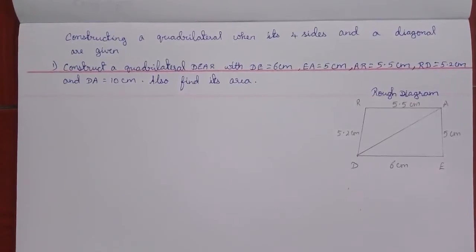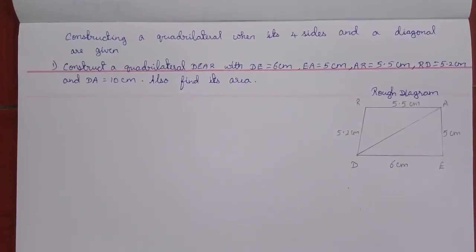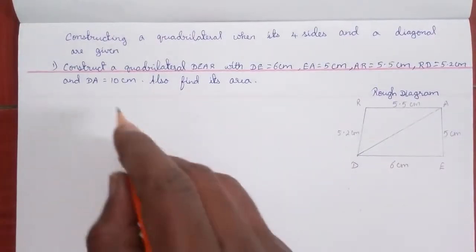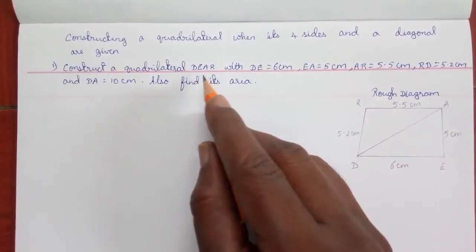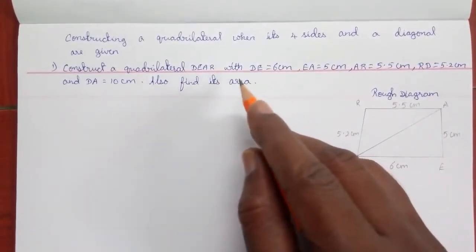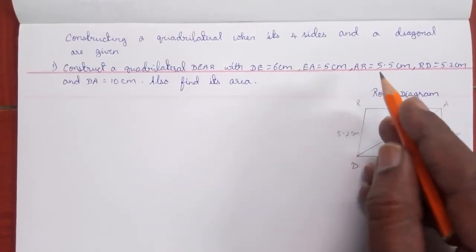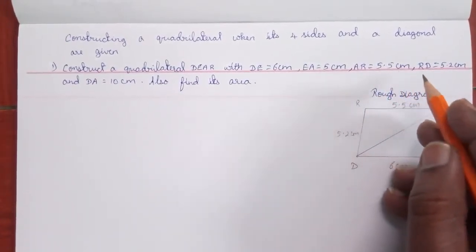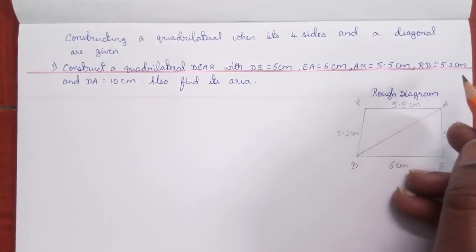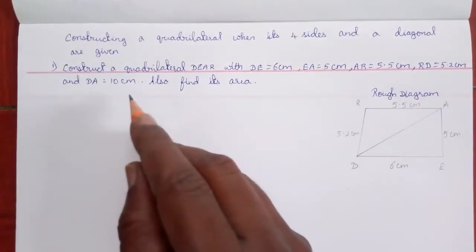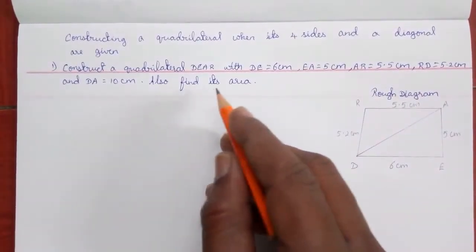The first type is constructing a quadrilateral when its four sides and a diagonal are given. Construct a quadrilateral D-E-A-R with DE equal to 6 cm, EA equal to 5 cm, AR equal to 5.5 cm, RD equal to 5.2 cm, and diagonal DA equal to 10 cm. Also find its area.